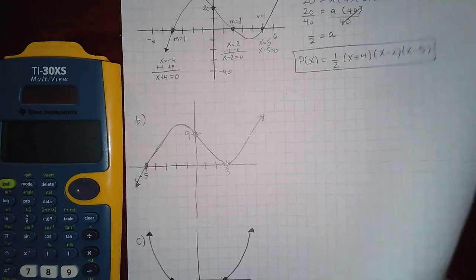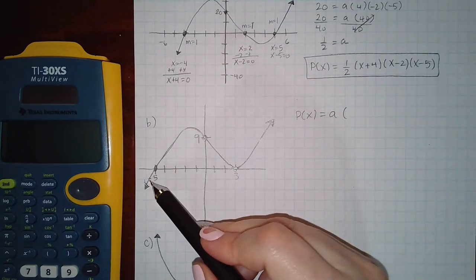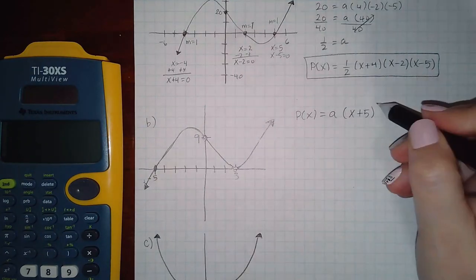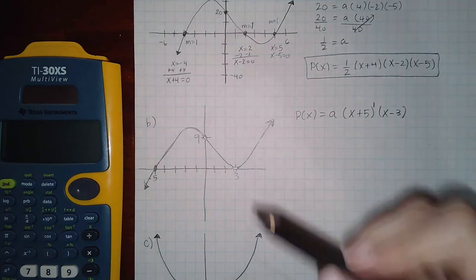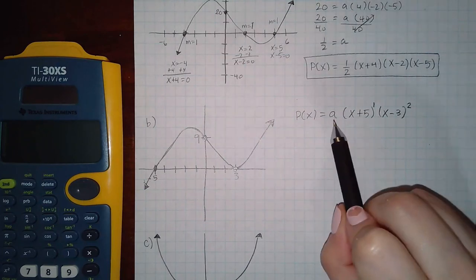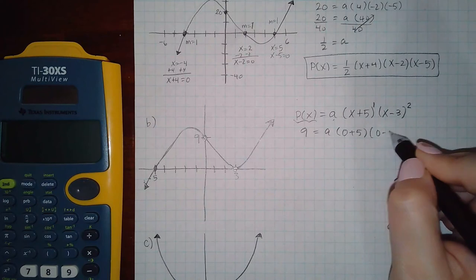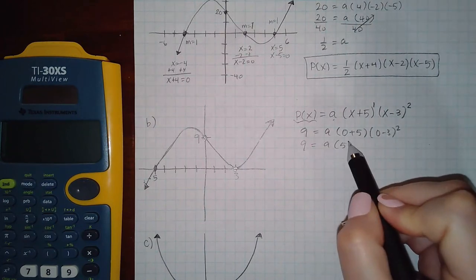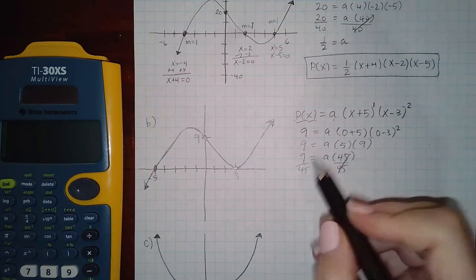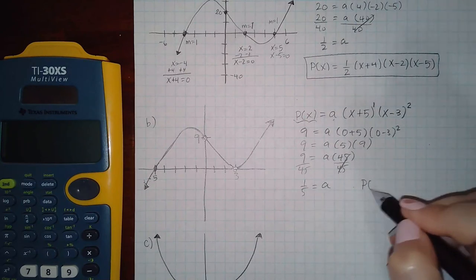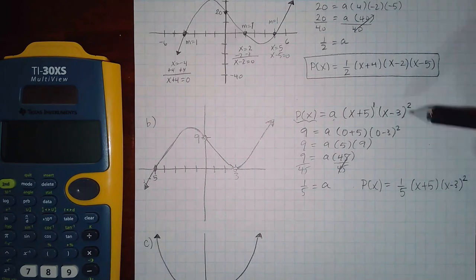Next example: x-intercept at negative 5 gives factor x plus 5, multiplicity 1 since it crosses through. x-intercept at positive 3 gives factor x minus 3, and since the graph bounces there the multiplicity is 2, so the exponent is squared. Using the y-intercept value of 9 at x equals 0: a times 5 times negative 3 squared equals 9, so a times 45 equals 9, giving a equals one-fifth. The polynomial is one-fifth times (x plus 5)(x minus 3) squared.